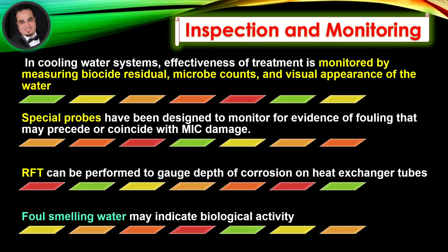Inspection and monitoring. In cooling water systems, effectiveness of treatment is monitored by measuring biocide residual, microbe counts, and visual appearance of the water. Special probes have been designed to monitor for evidence of fouling that may precede or coincide with microbiologically influenced corrosion damage. Remote field testing can be performed to gauge depth of corrosion on heat exchanger tubes.